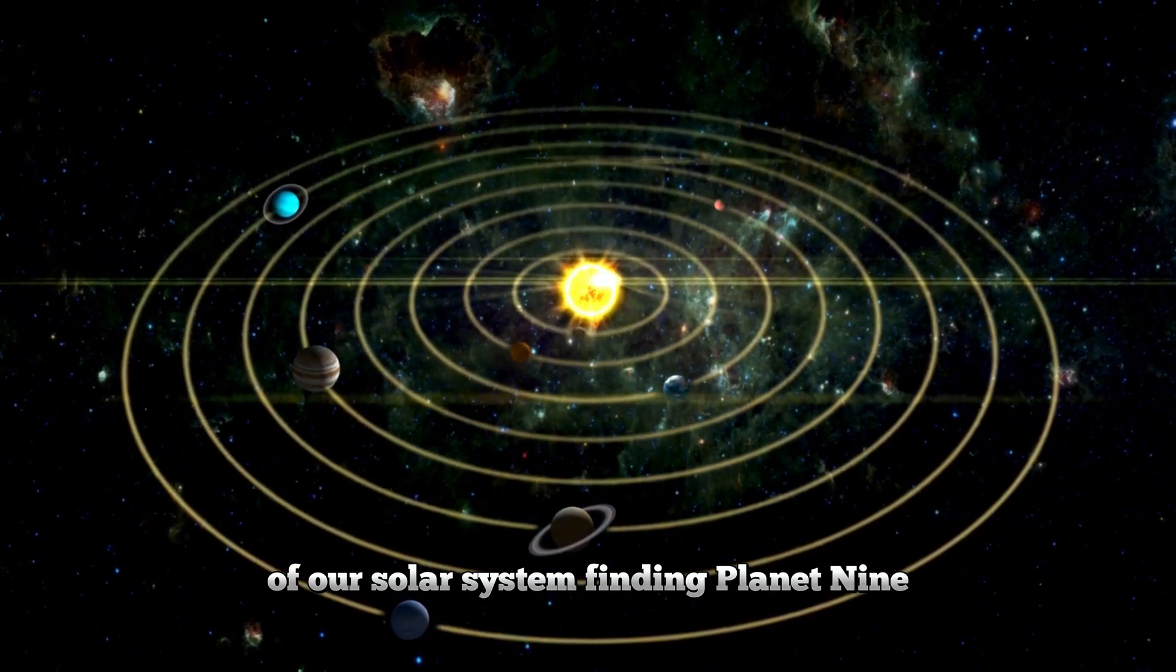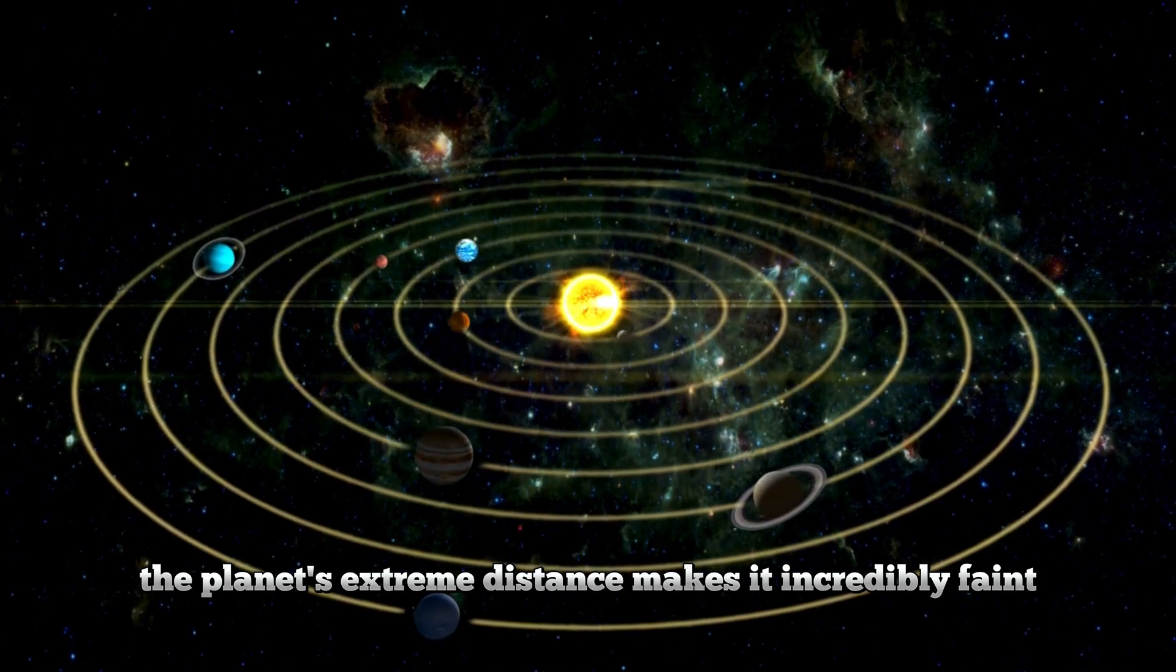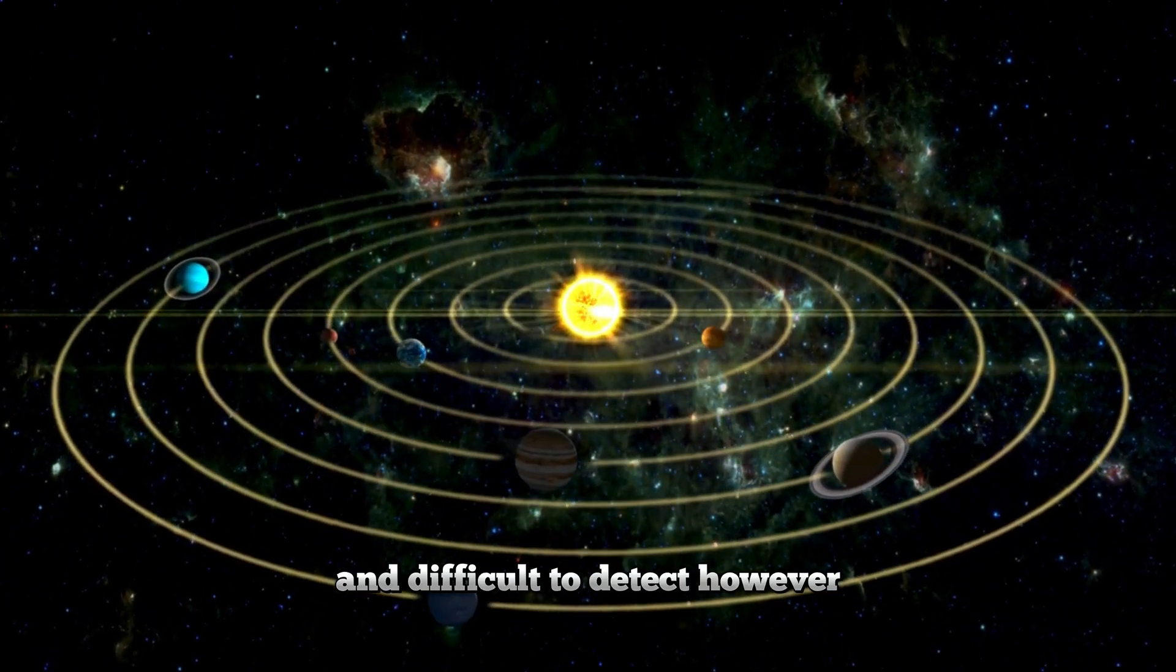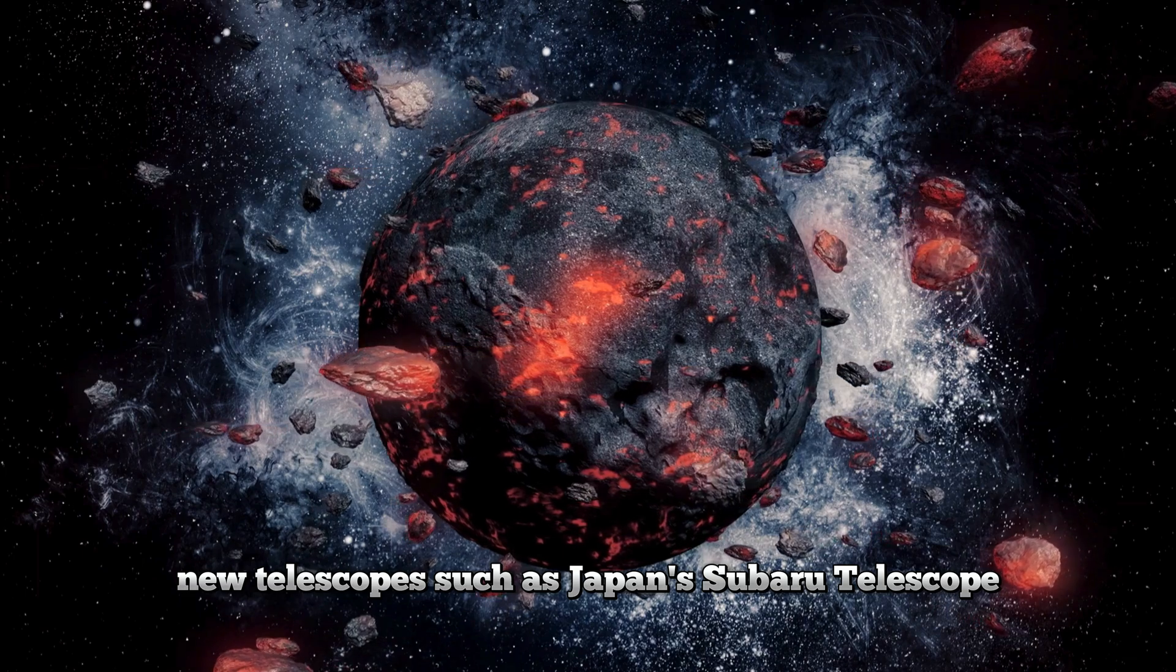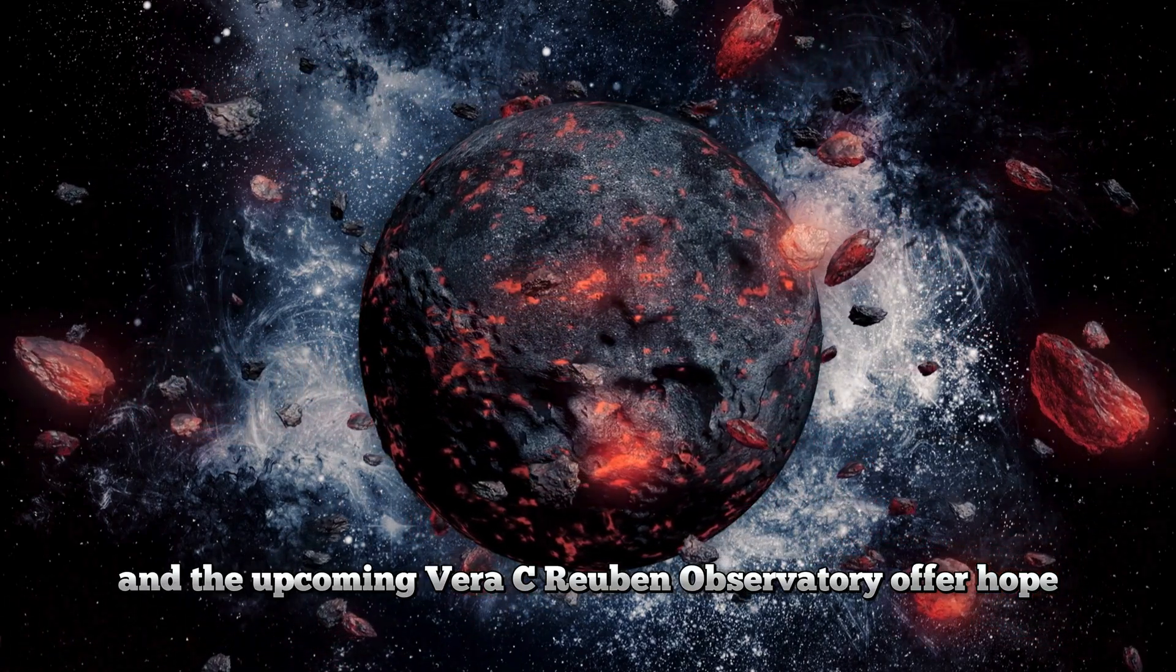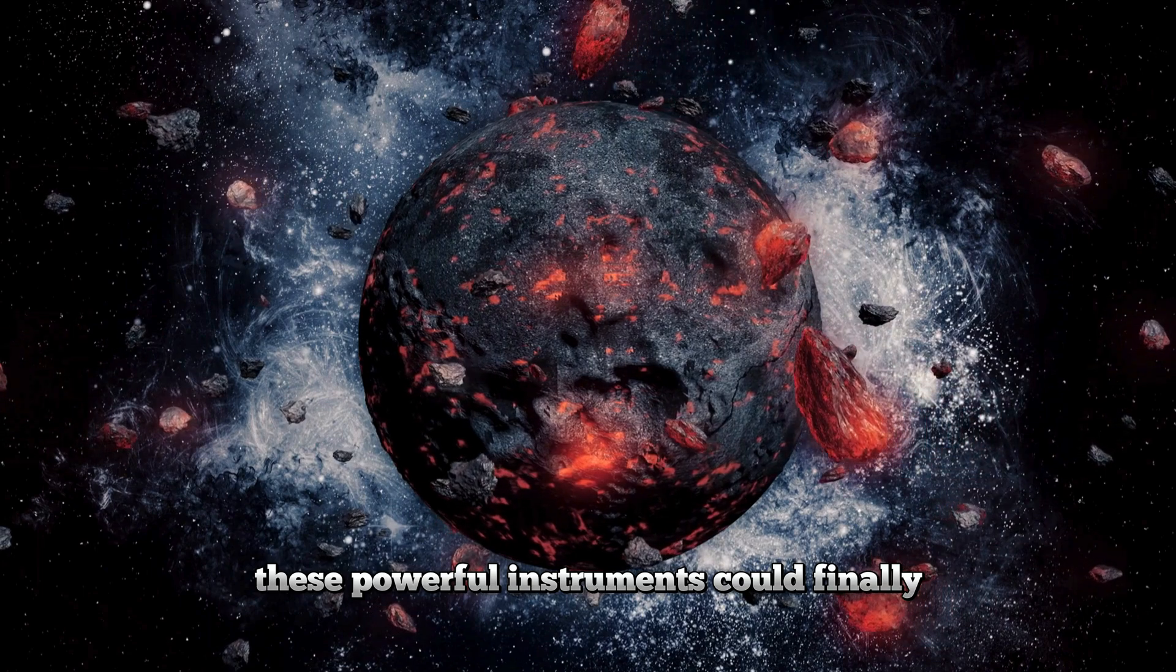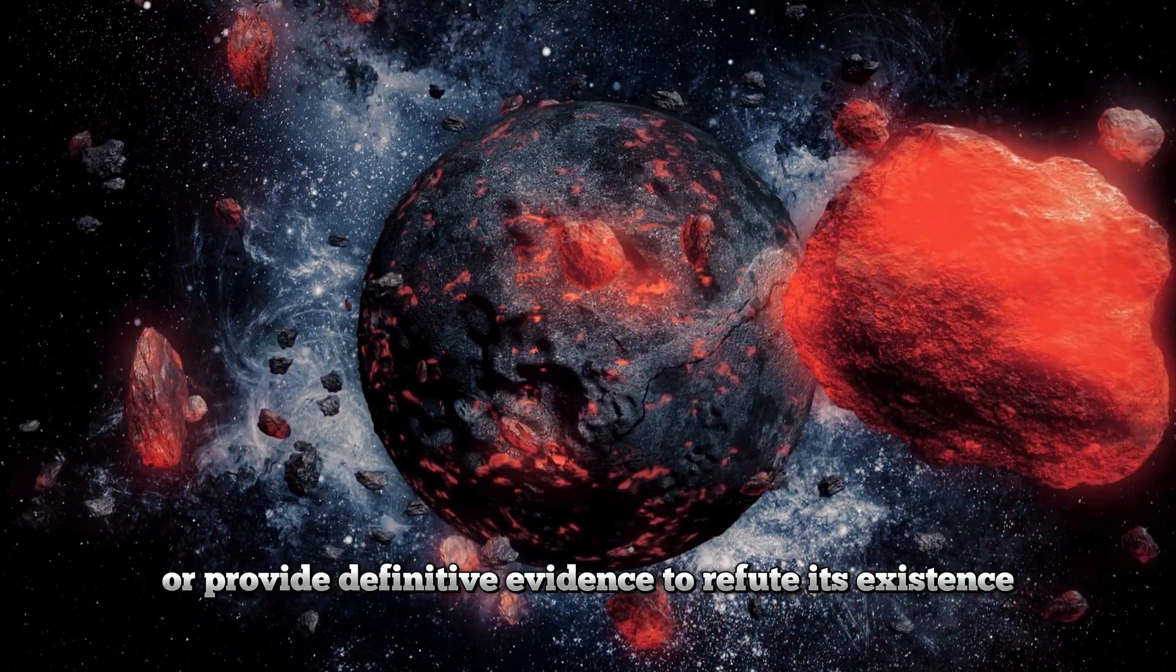Finding Planet Nine is like searching for a needle in a cosmic haystack. The planet's extreme distance makes it incredibly faint and difficult to detect. However, new telescopes, such as Japan's Subaru Telescope and the upcoming Vera C. Rubin Observatory, offer hope. These powerful instruments could finally reveal Planet Nine or provide definitive evidence to refute its existence.